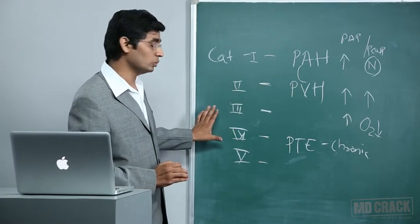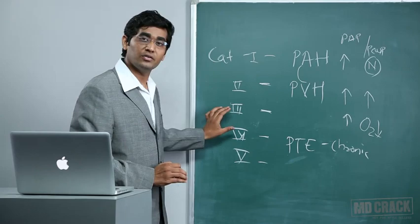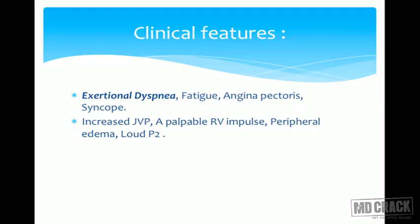The same applies to Categories 4 and 5. Regarding clinical features, the commonest symptom is exertional dyspnea, followed by fatigue, angina pectoris, and syncope. The commonest signs are increased JVP, palpable RV impulse, peripheral edema, and loud P2 — all signs of right ventricular failure.